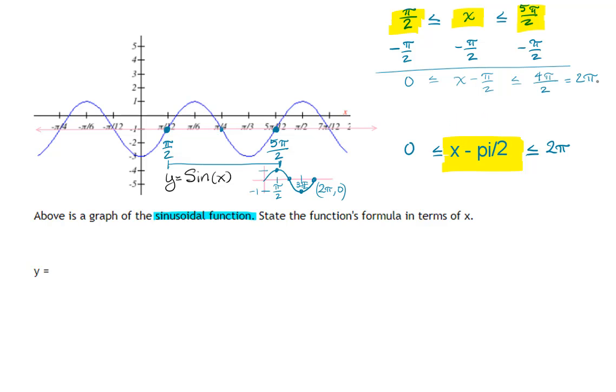So this x minus pi over two is the new inside of my sine function. So so far I have y equals sine of x minus pi over two.